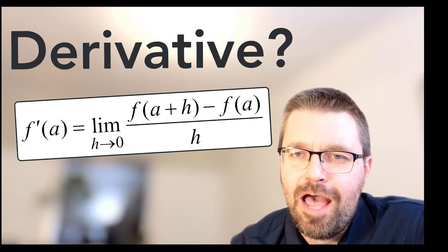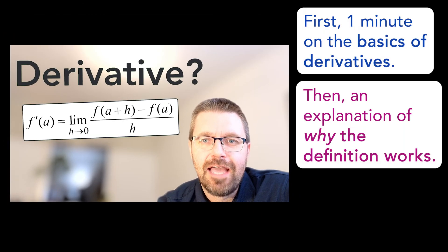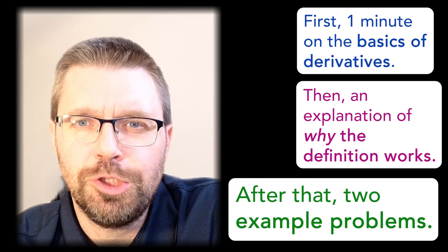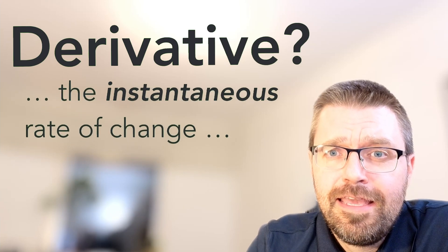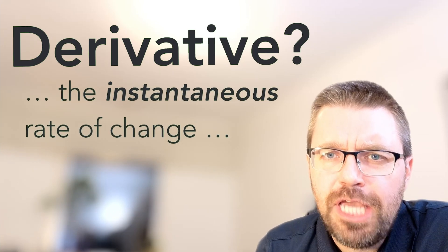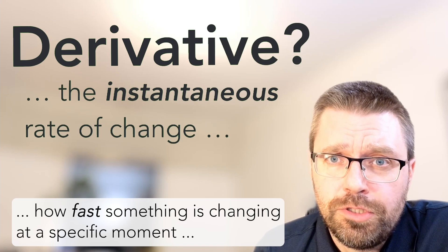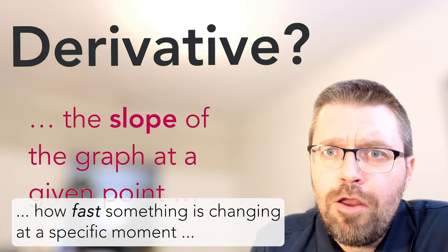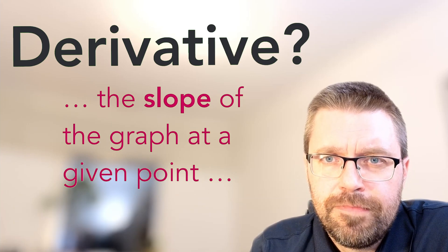What is a derivative and how does the definition of a derivative actually work? In this video, I will explain it as clearly as possible. The derivative is the instantaneous rate of change of a function at a specific point. You can think of it as the slope of the graph of the function at that given point. The slope is the derivative.